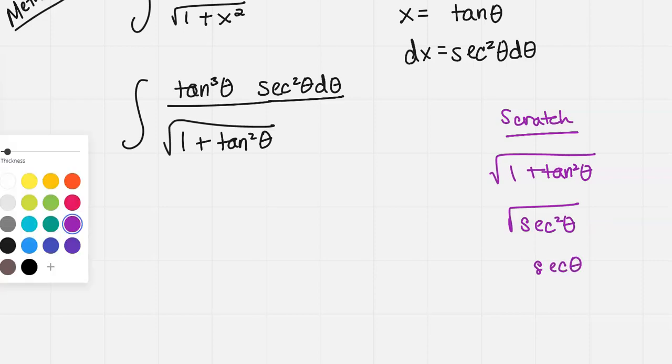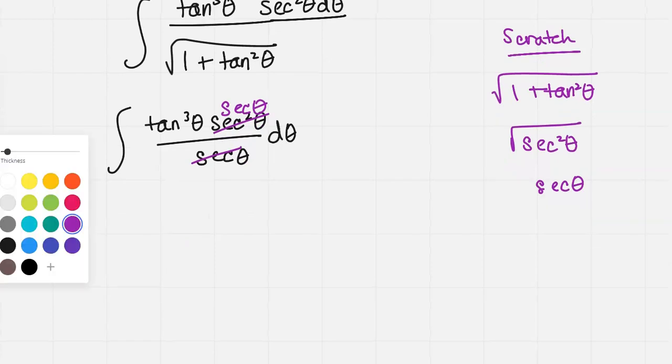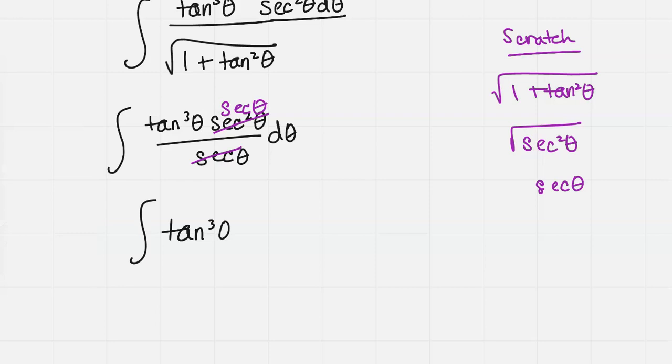So now my integral can be written as tan cubed theta times secant squared theta all over secant theta d theta. One of those thetas divides into the secant squared theta, so I'm left with just a single secant theta in the numerator. My integral becomes tan cubed theta secant theta d theta.